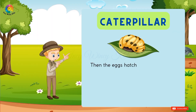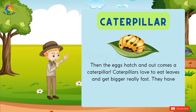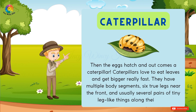The next stage is caterpillar. The eggs hatch and out comes a caterpillar. Caterpillars love to eat leaves and get bigger really fast. They have multiple body segments, six true legs near the front, and usually several pairs of tiny leg-like things along their belly.